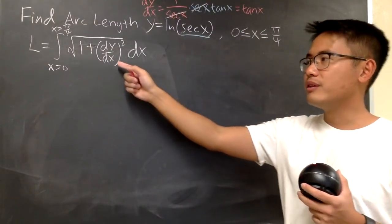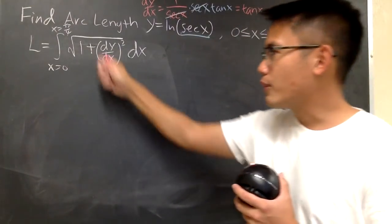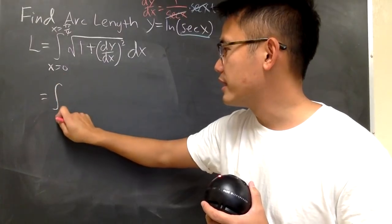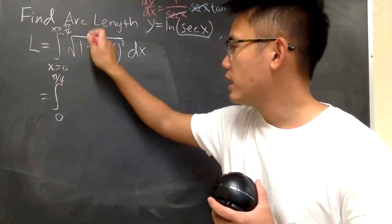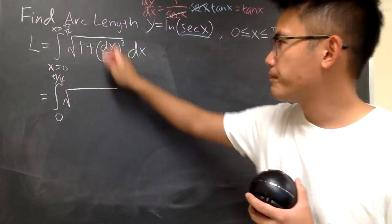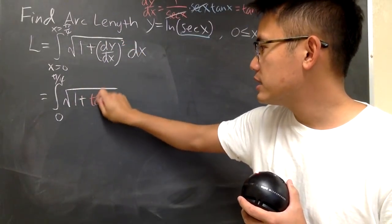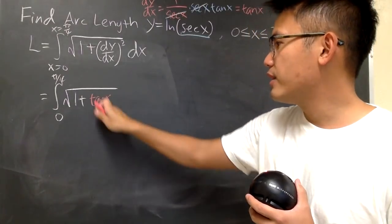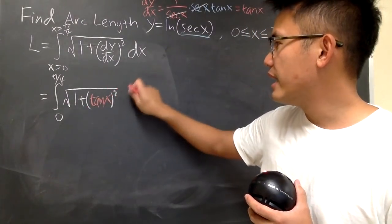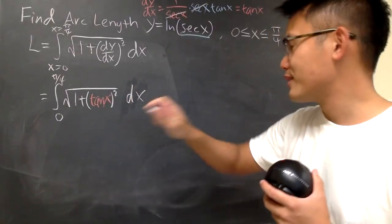Therefore, I just have to enter tan(x) right here. So the arc length is the integral from 0 to π/4, and you have 1 plus, inside here is tan(x). And of course we have to square that, and then we have dx on the outside, right here.